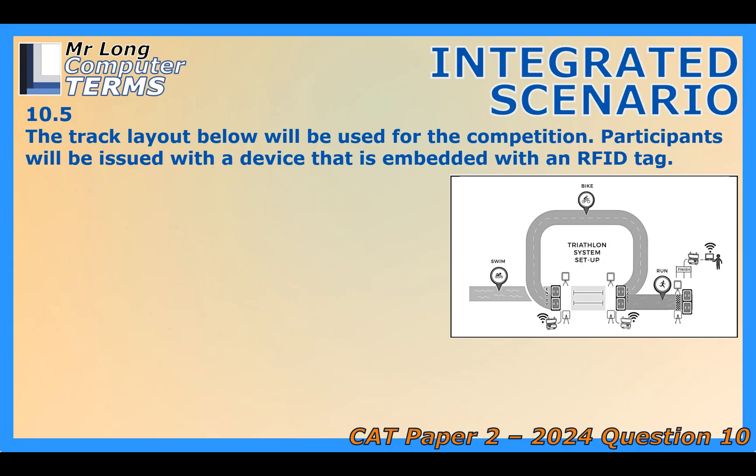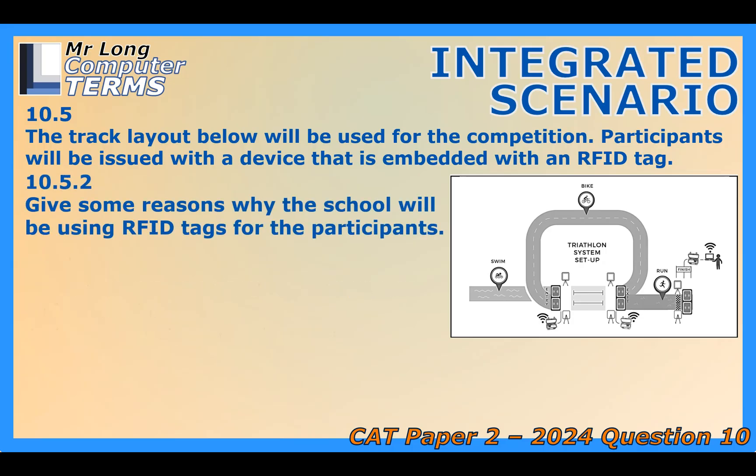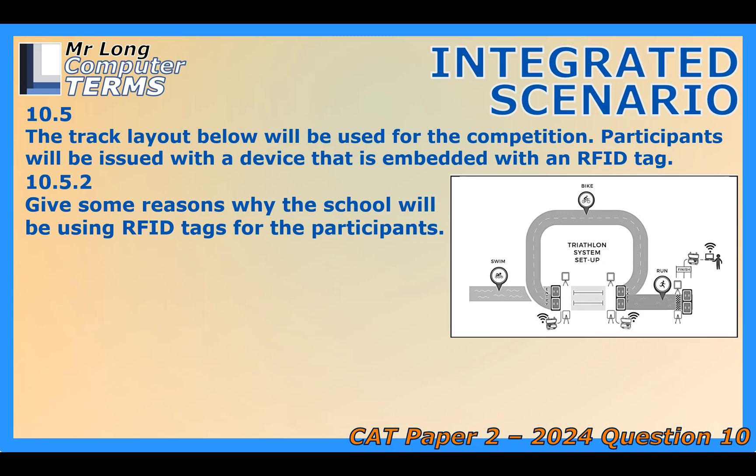Why bother tagging every single athlete? There are three critical reasons. First, tracking progress and safety — you know where each participant is roughly in real time, which is super important for safety, especially during the swim or on the bike course. Second, timing — it gives you an immediate, accurate timestamp when they hit a checkpoint or the finish line, with no human stopwatch errors. And third, ranking — because you have the times instantly, you can calculate their position and rank right away, for announcers, for online results, everything.